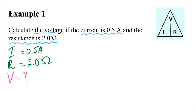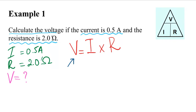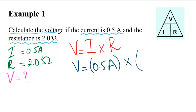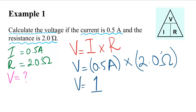Step number three is to write down the formula, which is V equals I multiplied by R. Step number four is when you manipulate the formula to isolate the variable you need to solve for. But in this case we're solving for voltage, which is already isolated, so we don't need to do any manipulation. We simply plug in the values: current is 0.5 amps multiplied by resistance. The answer is 1, so the voltage is 1 volt.